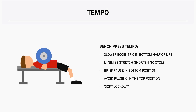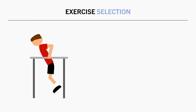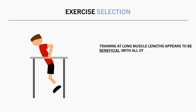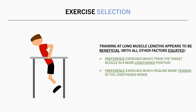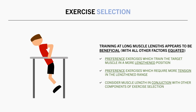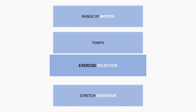The next strategy is to be strategic with exercise selection. As we have discussed, muscle length isn't the only consideration for exercise selection, but it does seem to have an influence. With all other factors equated, training a muscle at a longer length will usually be slightly more favorable for muscle growth. So if you have the choice between two similar exercises, it is probably best in most cases to select the one which trains the target muscle in a more lengthened position. Furthermore, even if two exercises train the muscle at a similar length, it is worth selecting the one which biases more tension in the lengthened range. But make sure to consider muscle length as one component of exercise selection, not as the only factor which influences hypertrophy.